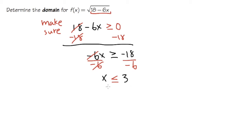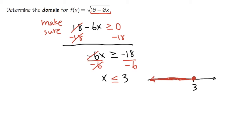This is how you can present the answer in inequality format: x ≤ 3. We can also show the graph on a number line. We care about the number 3, so let me label it. We use a closed circle because we have an equal sign. Since x is less than or equal to 3, we go to the left. This is the graphical way to represent the domain.